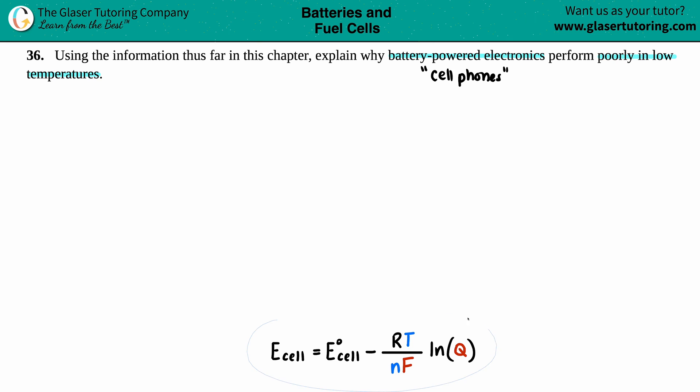Well, it all comes down to the Nernst equation. The E cell equals the standard cell potential minus RT divided by nF times the ln of Q. Now, we don't have to solve anything here. We just have to relate your cell potential. And I'm highlighting this one because we're not talking about standard cell potential. This would be at room temperature. That's why it has this little notch here. This E cell is your cell potential of the battery inside your cell phone.